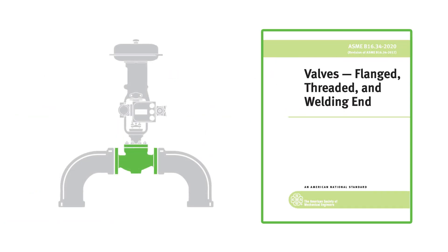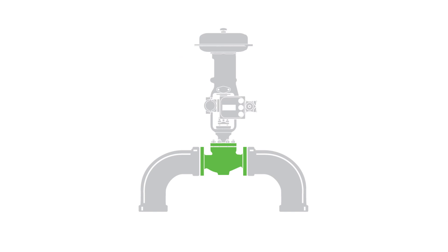ASME B16.34 is the control valve design code that Emerson uses as the basis for Fisher control valve designs. B16.34 covers material pressure temperature ratings, dimensions, tolerances, and more.